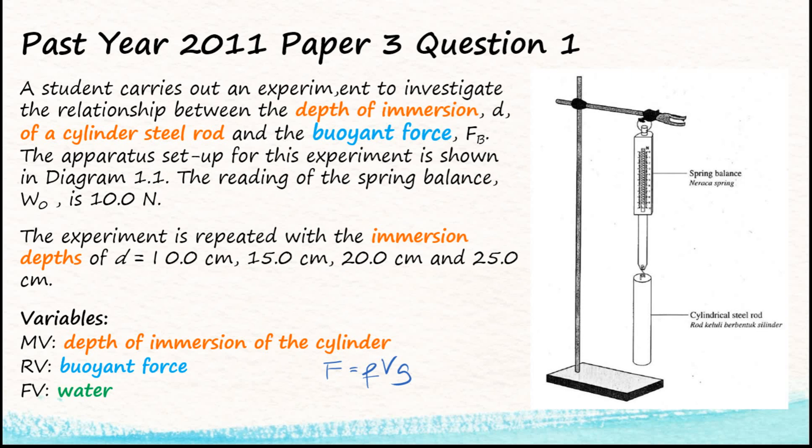That's how we identify the manipulated variable and responding variable from the questions, and we find the fixed variable by investigating the factors that affect the responding variable to see which may change the result, and then we keep it constant.